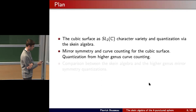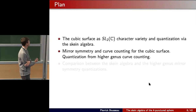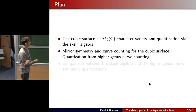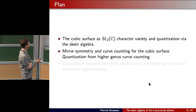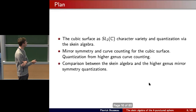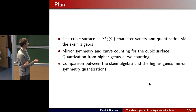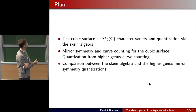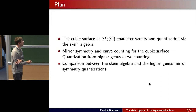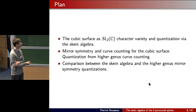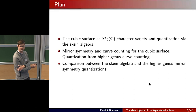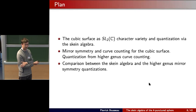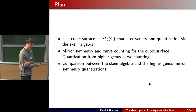Then I will talk about the enumerative geometry part, which involves mirror symmetry and curve counting on cubic surfaces. There is also a different quantization story involving higher genus curve counting. The main point of the talk is a comparison between the quantization of the cubic surface geometry given by three-dimensional topology via the skein algebra, and the one given by higher genus mirror symmetry — higher genus meaning compact curves of higher genus.